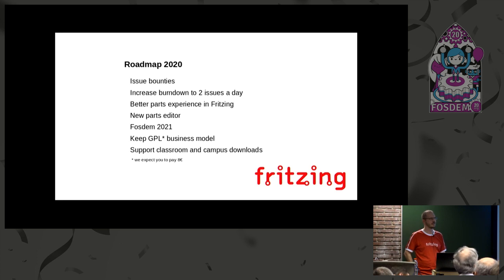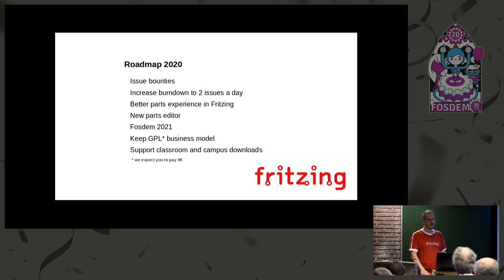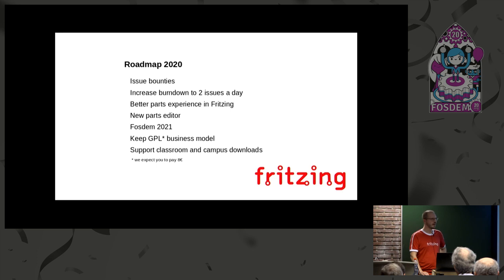Question about the 8 euros per download: if you download via your distro, does that apply? So eight euros per download is a bit weird — how does it work for distro productions like Ubuntu? We still have the Linux and Mac version on GitHub releases. Of course it's GPL, so Ubuntu can just take the source code, compile, and put it in Ubuntu, Arch Linux, Fedora, or whatever. On the other side, per-download is also a bit strange if you have multiple computers — it's a weird business model.